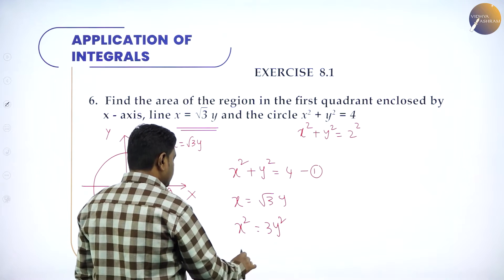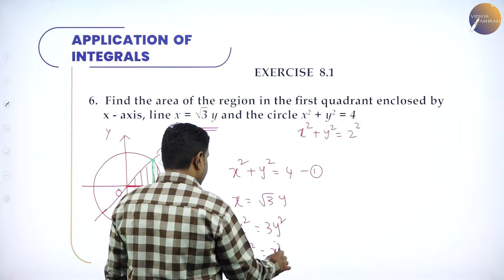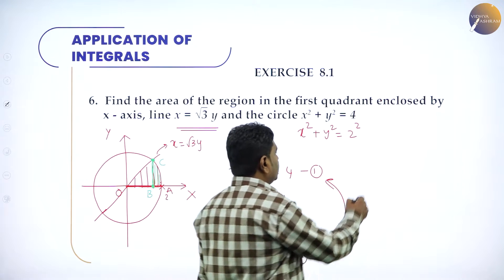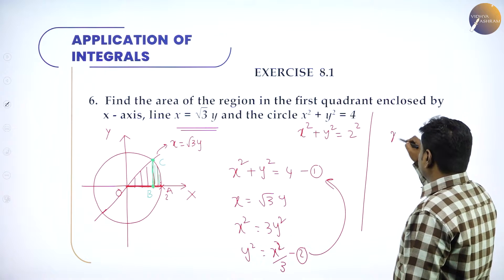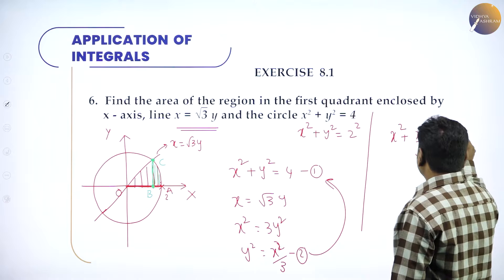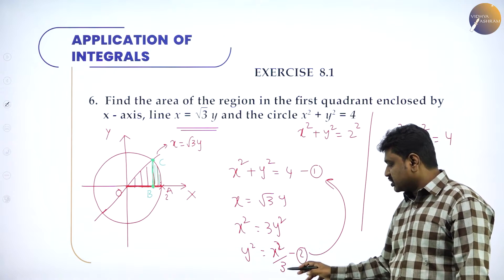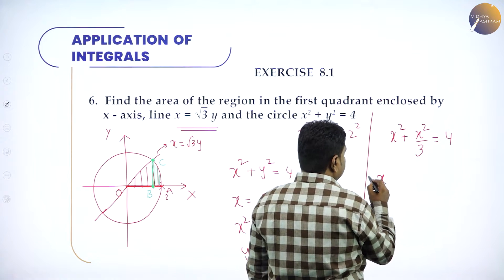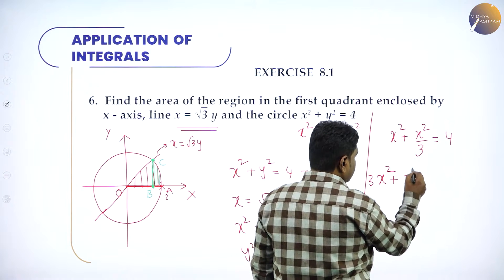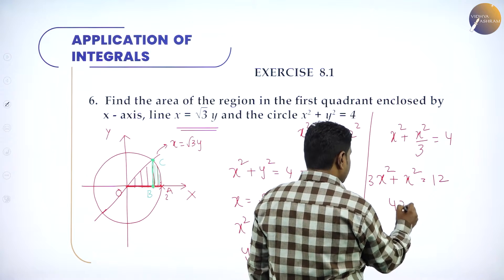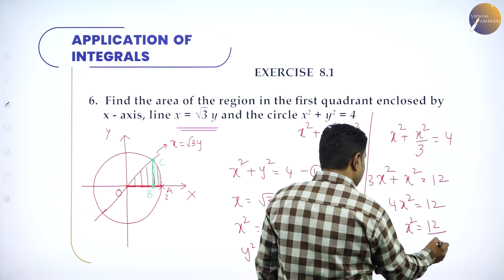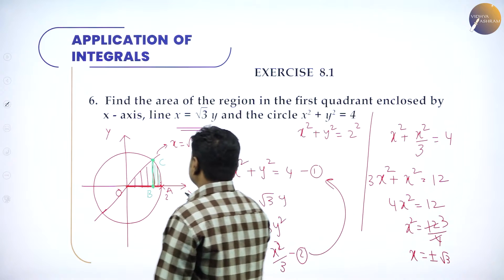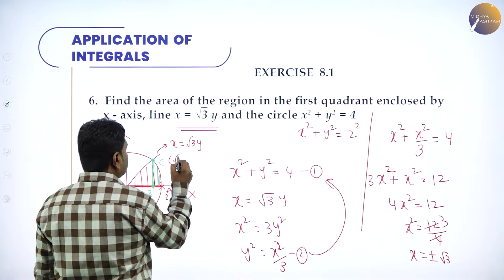Substituting x = √3·y, squaring gives x² = 3y², so y² = x²/3. Substituting into x² + y² = 4 gives x² + x²/3 = 4, then 3x² + x² = 12, so 4x² = 12, x² = 3, and x = ±√3. In the first quadrant, x = +√3, so the point of intersection is (√3, y) and the line cuts the x-axis at √3.